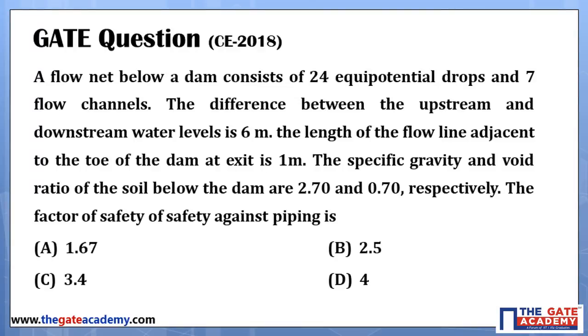So 4 options are there. A is 1.67, B is 2.5, C is 3.4, and option D is 4. So I can put answer is B.